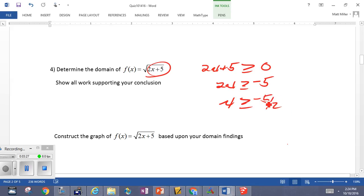2x is greater than or equal to negative 5. x is greater than or equal to negative 5 halves or 2 and a half negative. And, of course, what that means, that means that the domain is only defined from the x value of negative 5 halves, negative 2 and a half. And, it's still a root graph, so it just looks like that.